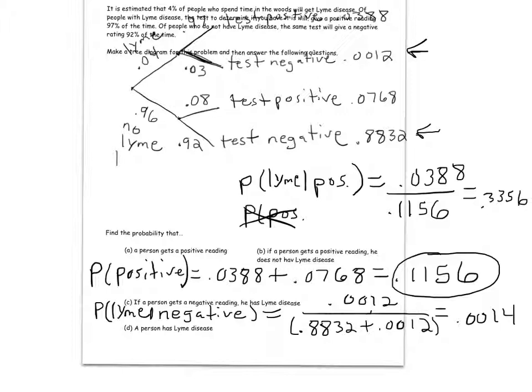And the last question — sometimes the questions are so easy they seem like trick questions. The probability that a person spending time in the woods has Lyme disease is just 0.04 — that was a given number in the problem. So sometimes the answers turn out to be just numbers that were given in the problem: that first branch of the tree, 4% of the people have Lyme disease.